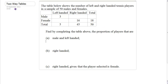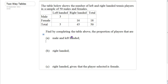In this question we're going to be dealing with two-way tables. The table below shows the number of left- and right-handed tennis players in a sample of 50 males and females. We're completing the table and then finding the proportion of players that meet certain criteria. What we need to do is try and fill in the gaps where we can.